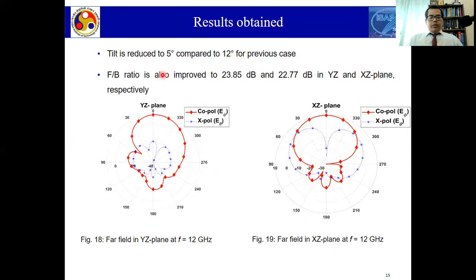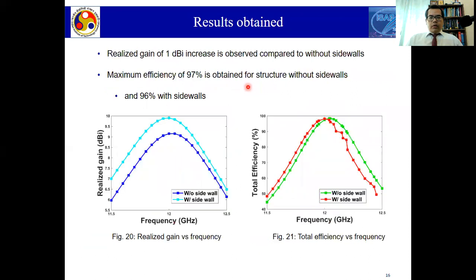With the sidewalls and reflector added, the tilt in the radiation pattern improved from 12 degrees to 5 degrees. The front-to-back ratio improved significantly — 22.7 dB and 23.85 dB for the XZ-plane and YZ-plane respectively, which is very good. The realized gain also increased by almost 1 dBi with the sidewalls. The maximum efficiency was 97% without sidewalls and around 96% with sidewalls.